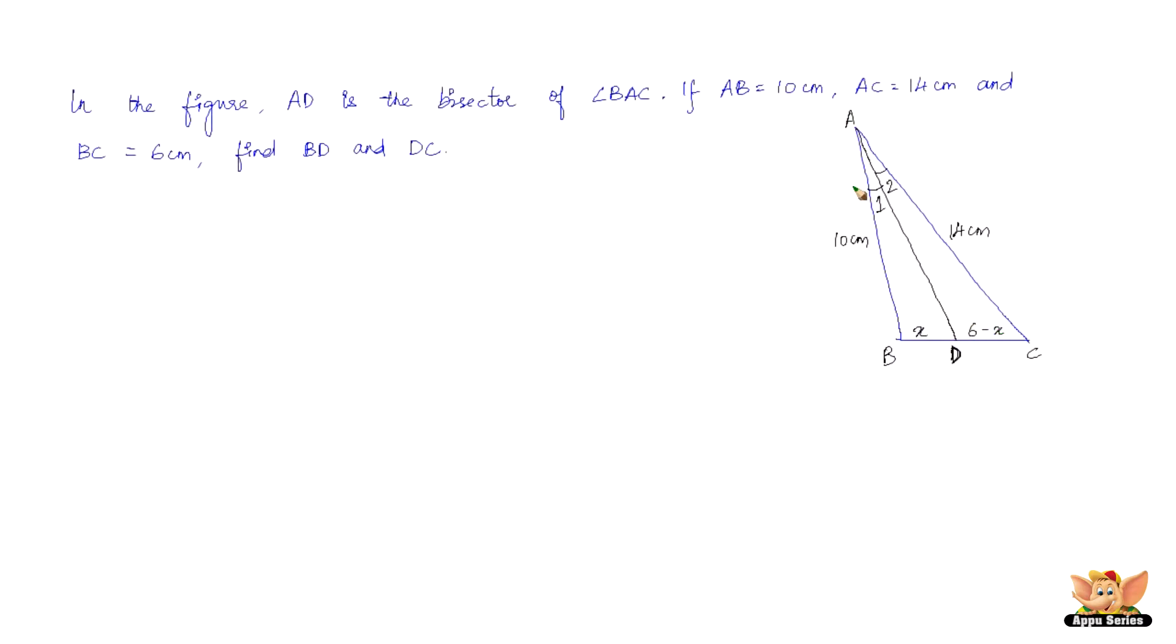So again, since AD is the bisector of angle A, it divides the opposite side, that is BC, in the ratio of the other two sides containing the angle. So very simple again, it is AB by AC equals BD by DC.